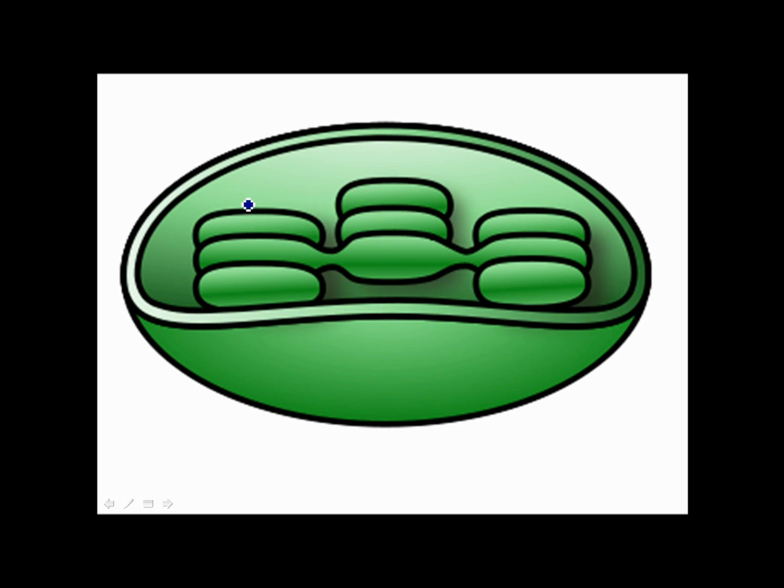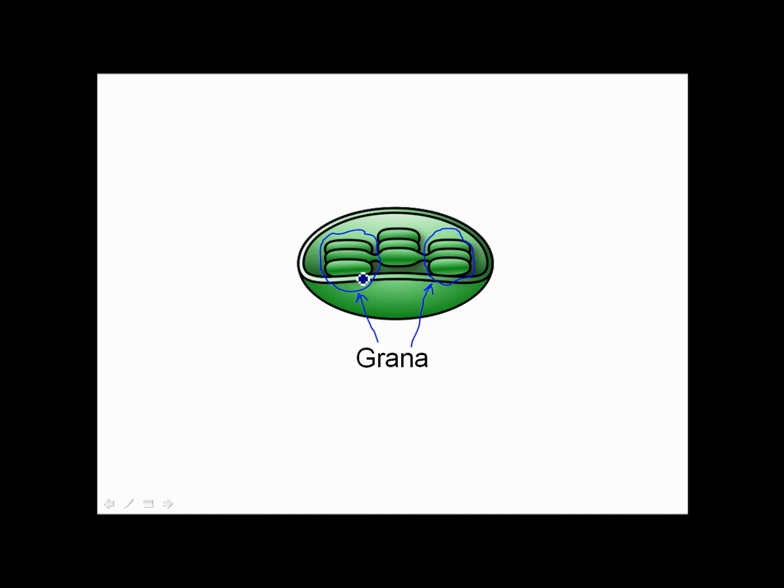Now the chloroplast is made up of this, it's kind of like a round circle and it's got these stacks of little sacs inside. These individual stacks of sacs are called grana, they're like little grains of green stoves. They are called grana, it means like grains.